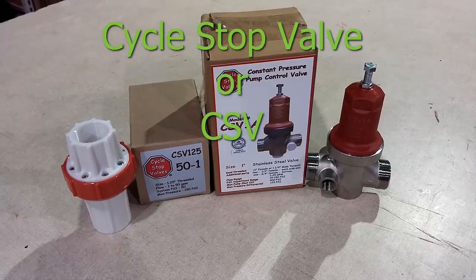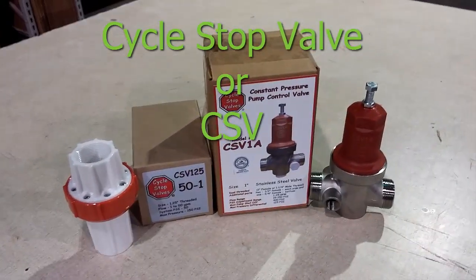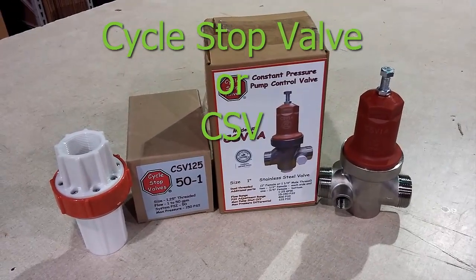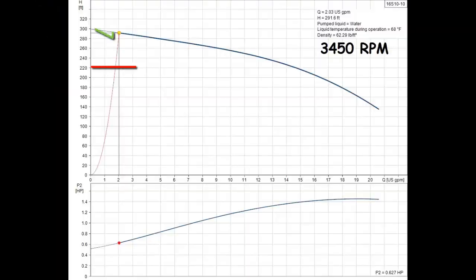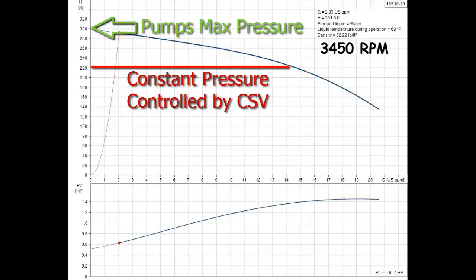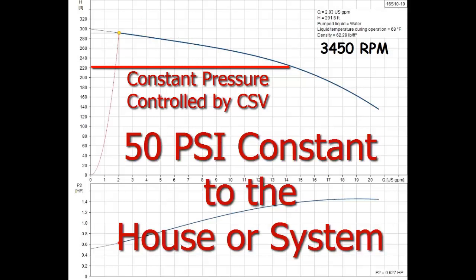Restricting the flow of a pump with a valve does not reduce the pump's pressure building ability like varying the speed does. The CSV reduces the pressure, so the house or system always sees a constant 50 PSI regardless of how much or how little flow is required.